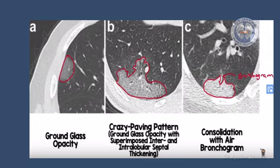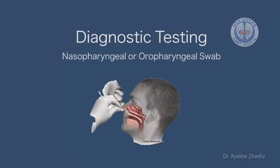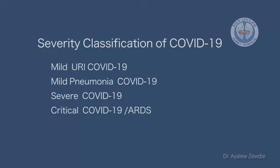Diagnostic testing for COVID-19 can be done from nasopharyngeal swab or oropharyngeal swab. Severity can be divided into four types: mild upper respiratory tract infection COVID-19, mild pneumonia COVID-19, severe COVID-19, and critical COVID-19 or ARDS.